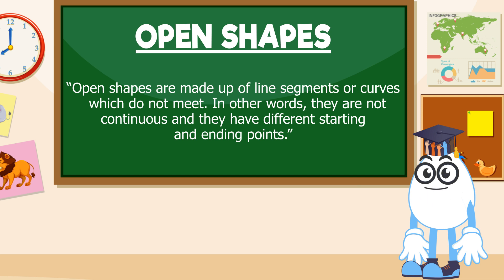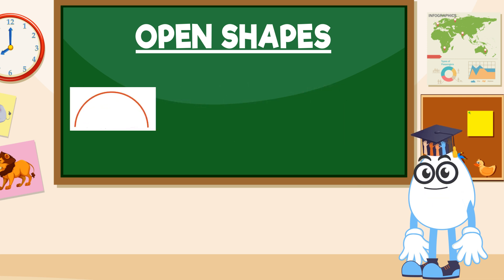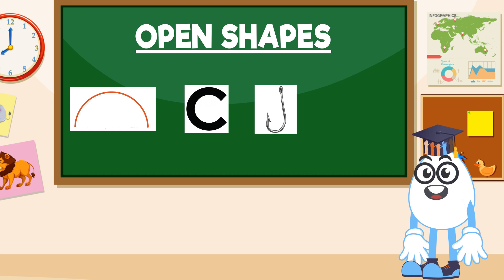Examples of open shapes are a semi-circle, the letter C, a fishing hook, a stethoscope, and many more.